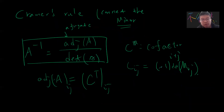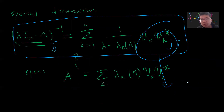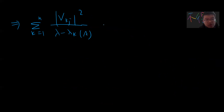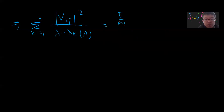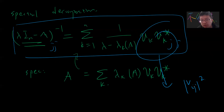So we just take the jj-component and get this. Now you compare these two expressions and take the jj-component on both sides. For the spectral decomposition side, if you take the jj-component you get the sum over k from 1 to n of |v_{kj}|^2 over (lambda minus lambda_k(A)). And for the other side you get the product over k from 1 to n-minus-1 of (lambda minus lambda_k(M_j)) divided by the product over k from 1 to n of (lambda minus lambda_k(A)).